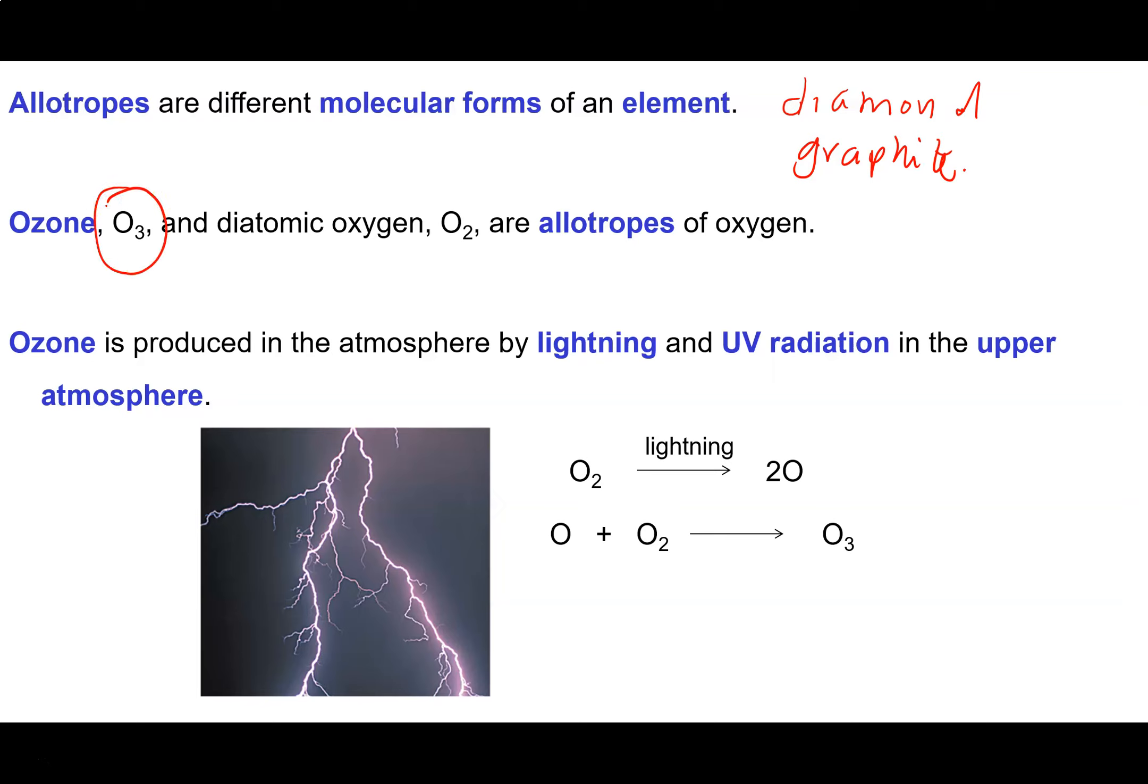Ozone is an allotrope of oxygen. The most common allotrope of oxygen is regular diatomic oxygen. But ozone is found in the upper atmosphere, where it's formed as a result of the action of very strong UV radiation up there.